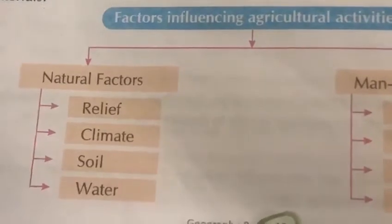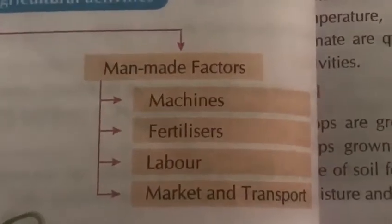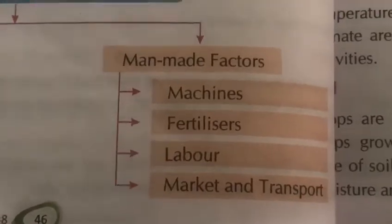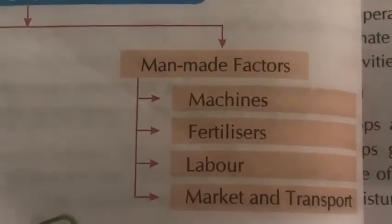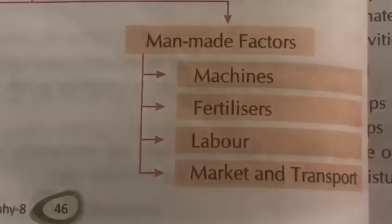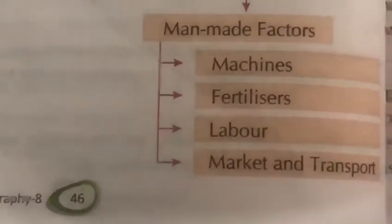In natural factors we have relief, climate, soil, and water. In man-made factors we have types of machines, fertilizers, labor, the number of men working, market, and transport. These are the man-made factors.